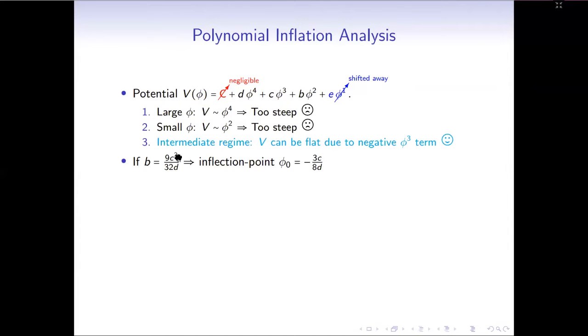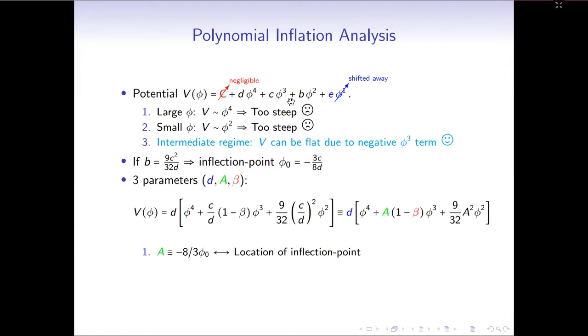In particular, there can be an inflection point if the parameters satisfy some condition. Indeed, for this potential, an inflection point is the only possibility to be consistent with the CMB data. So with an inflection point in mind, we can reparameterize this potential with three parameters. First, parameter A, which is just C over D, gives the location of the inflection point. Parameter beta, if it is zero, we will have an exact inflection point. However, we want the potential to have some slope in order to be consistent with the CMB data. Finally, the parameter D controls the amplitude of the potential, which can be constrained by the power spectrum.